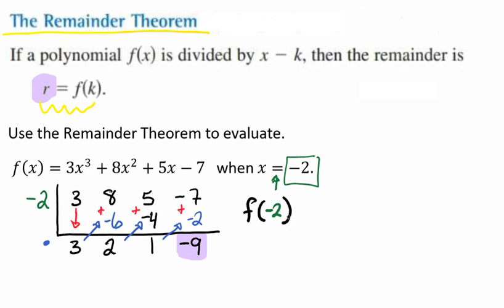If we plug that in to our equation right here, that's going to give us the value negative 9, which we get from our remainder. And so that is how to use the remainder theorem to evaluate.